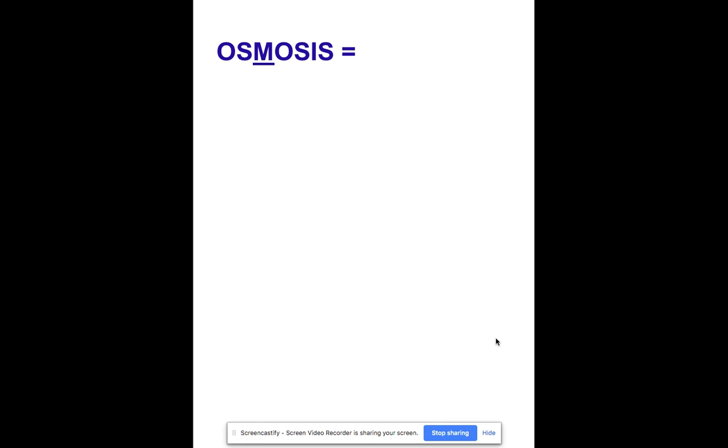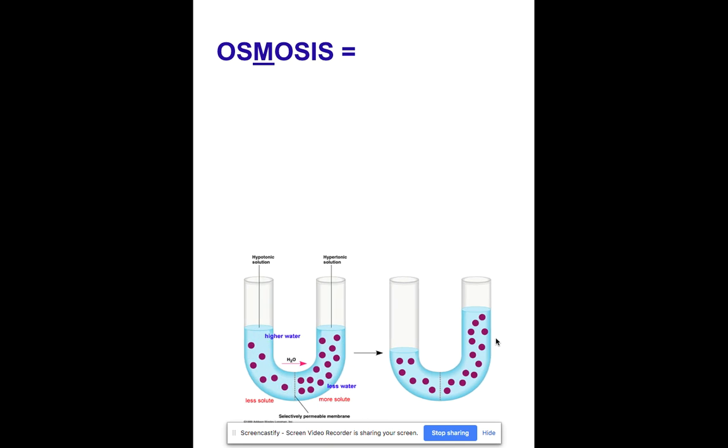Okay, so let's talk about osmosis. So, osmosis is a specific kind of cell transport. It has to do with water, water specifically across a cell membrane, which is why the M is underlined.